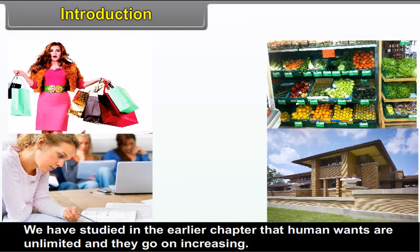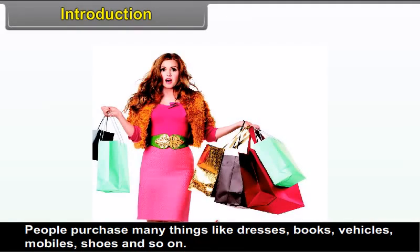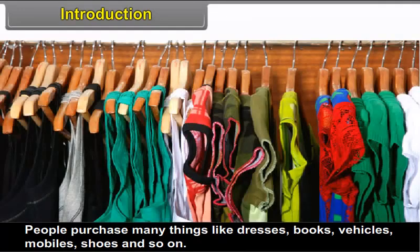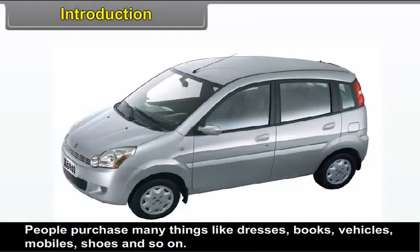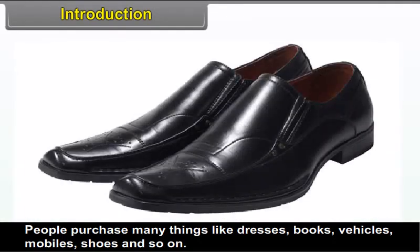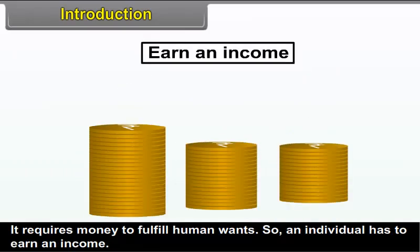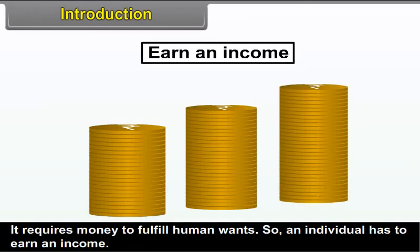3.1 Introduction. We have studied in the earlier chapter that human wants are unlimited and they go on increasing. People purchase many things like dresses, books, vehicles, mobiles, shoes and so on. It requires money to fulfill human wants, so an individual has to earn an income.